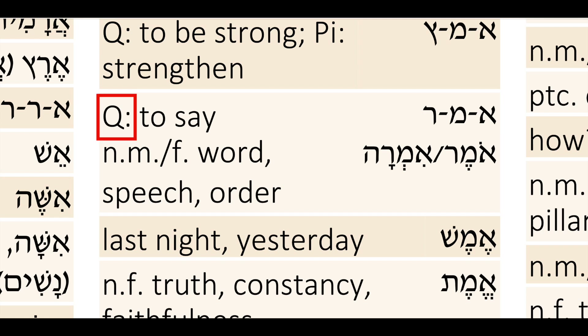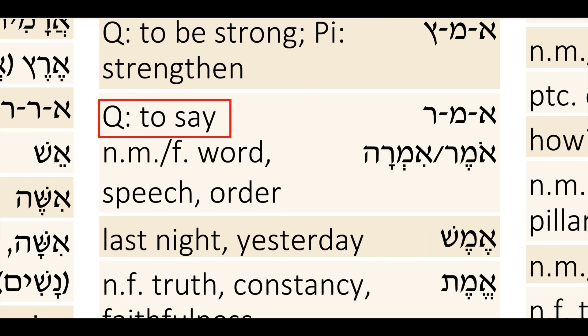So what does Amar mean? The first thing we see is Q. What Q stands for is the Qal form, the most basic form of verb, and the meaning is 'to say.'